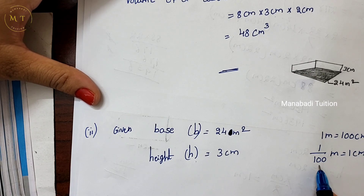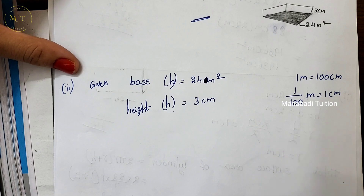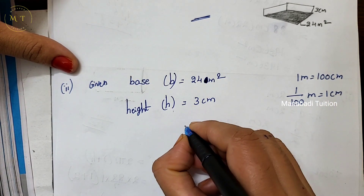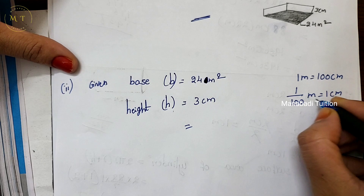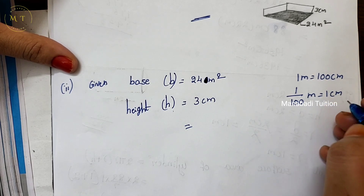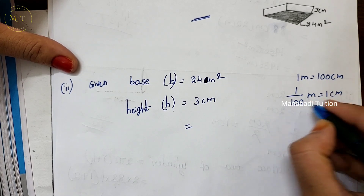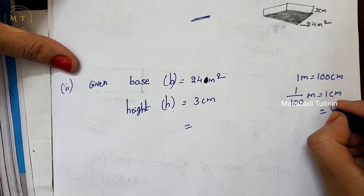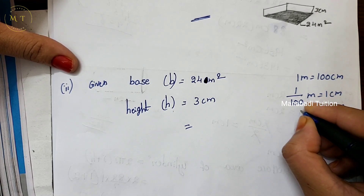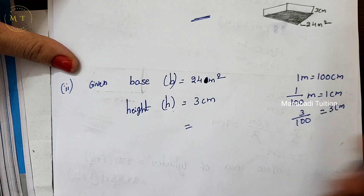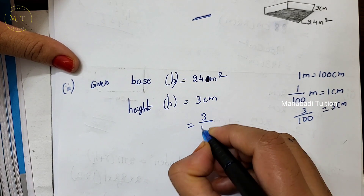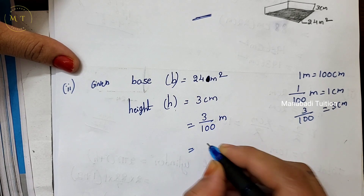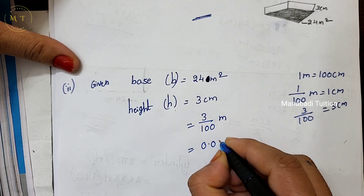We will transform using division. So 1 centimeter is equal to 1 by 100 meters. Here the height is 3 centimeters, so 3 centimeters is equal to 3 by 100 meters, which is equal to 0.03 meters.